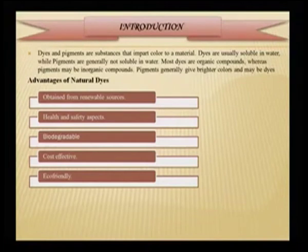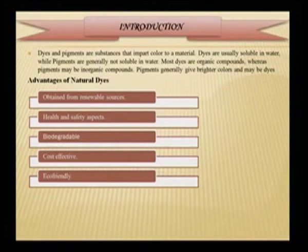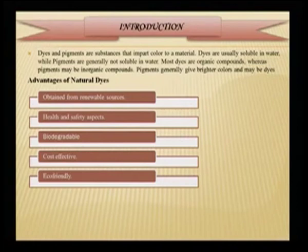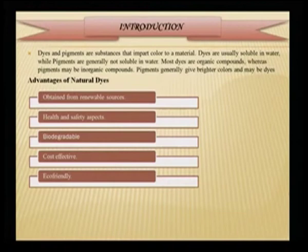As we all know, dyes and pigments are substances that impart color to a material. Dyes are usually soluble in water while pigments are generally not soluble in water. Most dyes are organic compounds whereas pigments may be inorganic compounds as well. Pigments generally give brighter colors, but dyes have more applicability. Pigments are only used for printing and other purposes because of their insoluble nature.